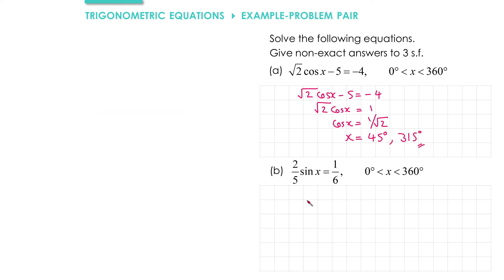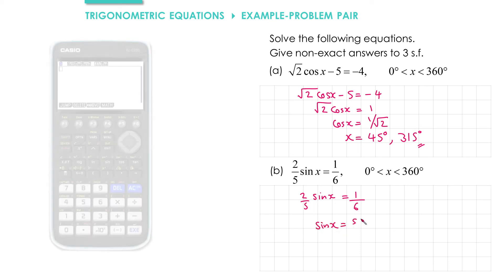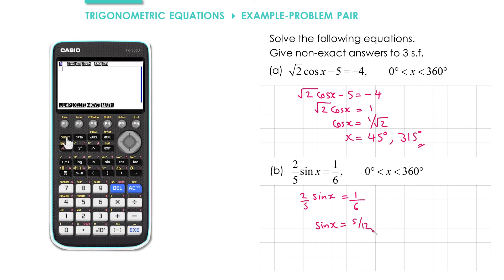For part b, we've got two fifths sine x equals one sixth. We'll multiply both sides by 5 and divide both sides by 2, which gives us sine x equals five twelfths. We use our calculator to do inverse sine of five twelfths, and that gives us x equals 24.6 degrees, rounded to three significant figures.